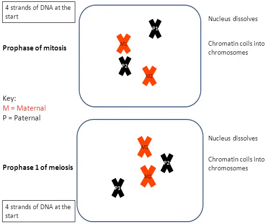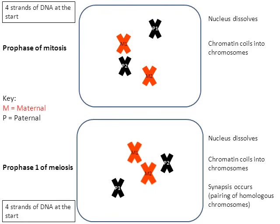Now that the chromosomes have formed, let's focus on the bottom cell — prophase number one of meiosis. There's a process called synapsis that's about to happen in the animation, and this only happens in prophase number one of meiosis. During the process called synapsis, the two homologous chromosomes are paired up with one another. The maternal chromosome number one and the paternal chromosome number one are paired up, and the same thing happens with chromosome number two. This pairing up of homologous chromosomes is called synapsis and only happens during prophase number one of meiosis.